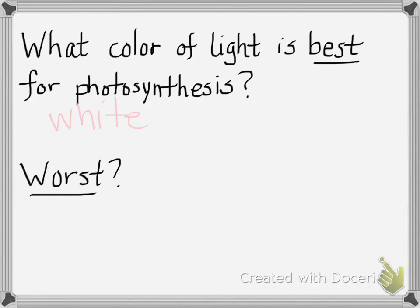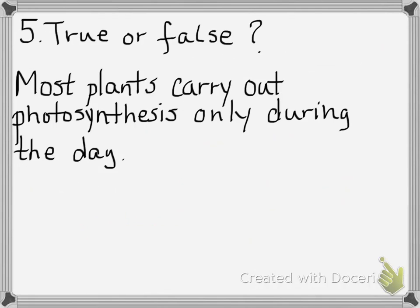Look out the window at those plants. What color of light would be the worst for photosynthesis? Green — because plants reflect green light. Question five, true or false: most plants carry out photosynthesis only during the day. True — you have to have sunlight to do photosynthesis.